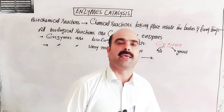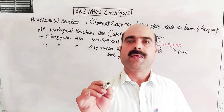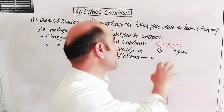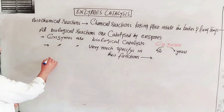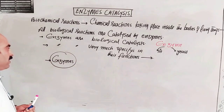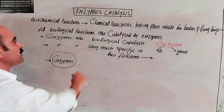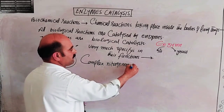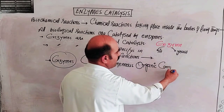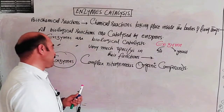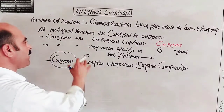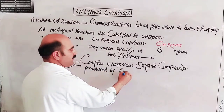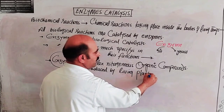One enzyme can catalyze only one biochemical reaction. Enzymes are complex nitrogenous organic compounds — nitrogen-containing organic compounds. These are produced by living plants and animals.